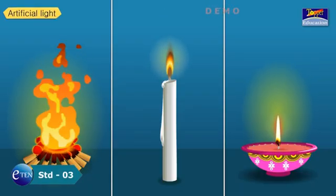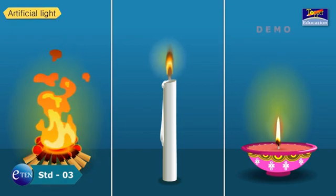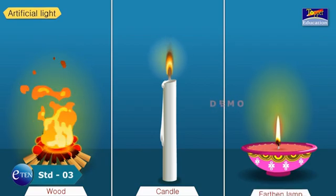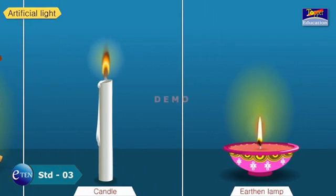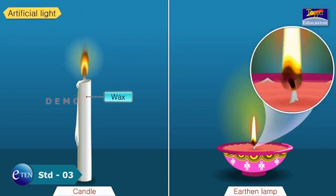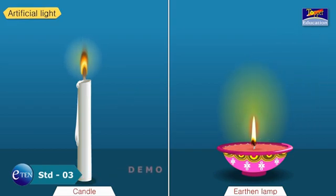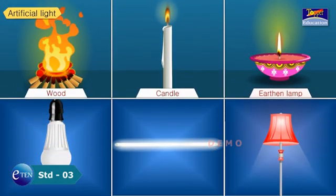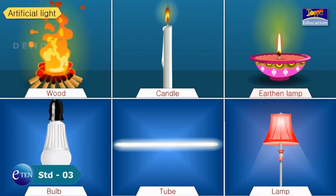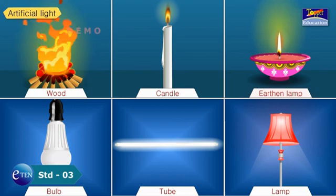Artificial Light. Sources of artificial light are burning wood, candles, and earthen lamps. Candles are made of wax; oil and wicks are used in lamps to burn. Nowadays, we use electric bulbs, tubes, and lamps as sources of light. These all are man-made sources of light.